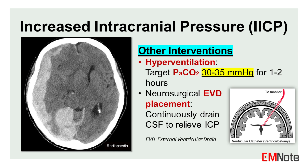Neurosurgical EVD placement: in cases of refractory or rapidly increasing ICP, the placement of an external ventricular drain (EVD) may be required. This invasive procedure involves inserting a catheter into the ventricular system to continuously drain cerebrospinal fluid, thereby relieving elevated ICP.